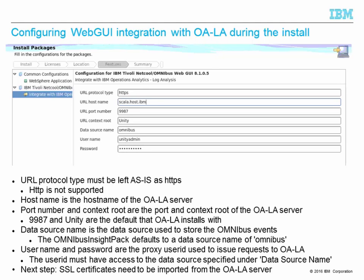Data source name is the name of the data source which has been defined in LA to store Omnibus events. This defaults to 'omnibus', which is the name that the insight pack defaults to using. Username and password represent a proxy user which is used to issue requests to LA. So when event viewer charts are generated, this user ID will be issuing requests to LA. The user ID you define here must have been configured to have access to the data source defined under the data source name.